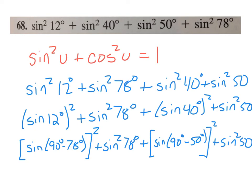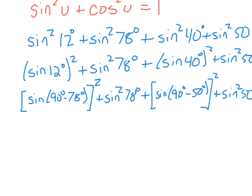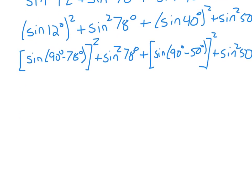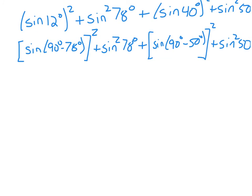And so now we're going to apply the co-function identity to just the ones I changed. So according to the co-function identity of sine, sine of 90 minus 78 is really just the cosine of 78 and of course this is still squared.